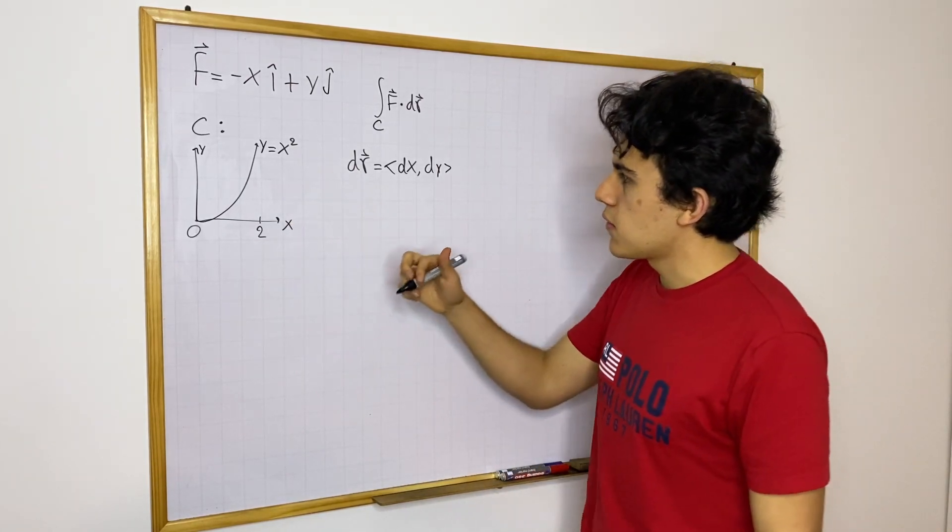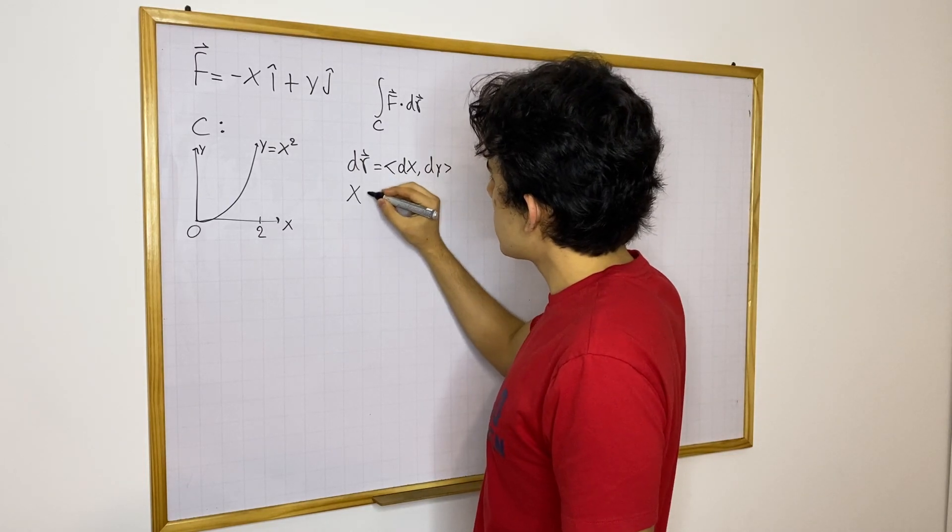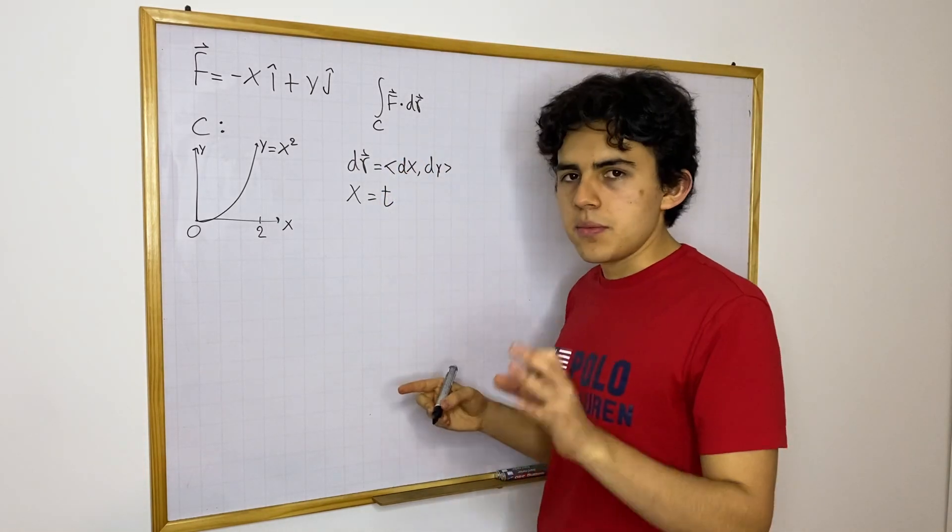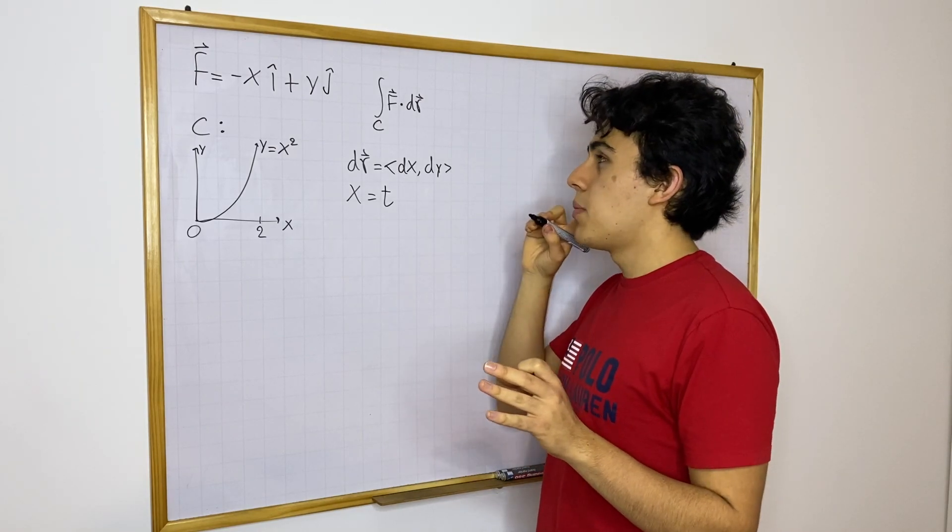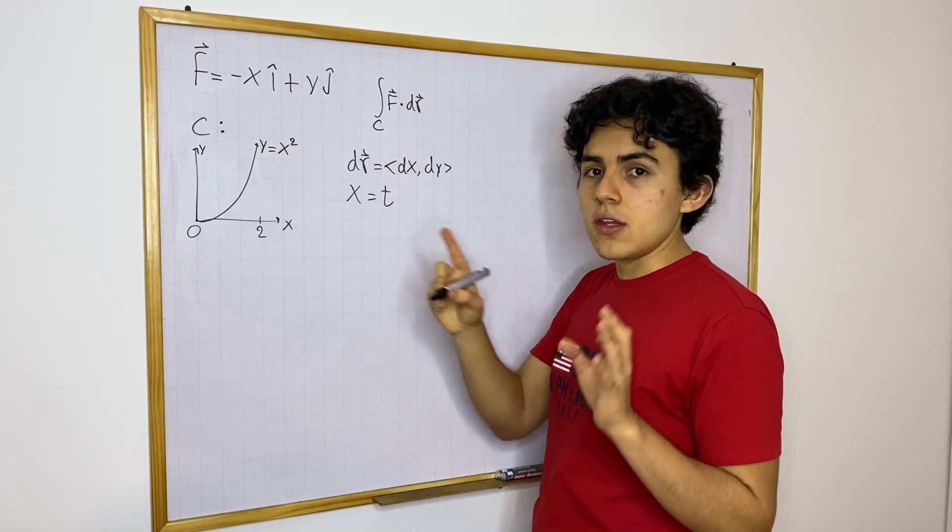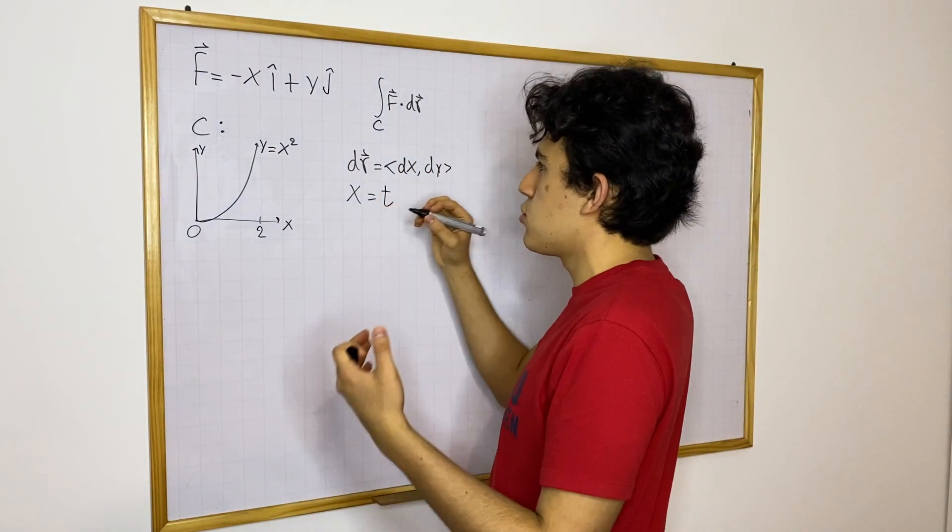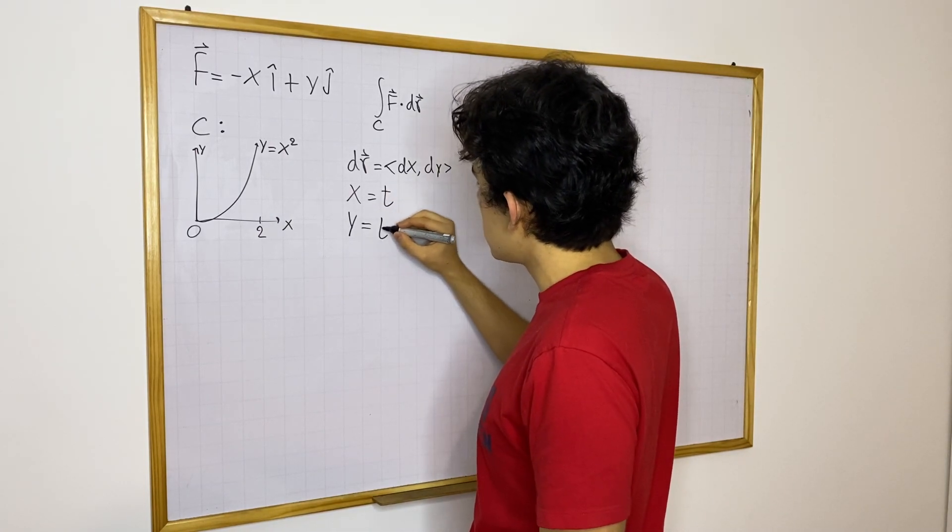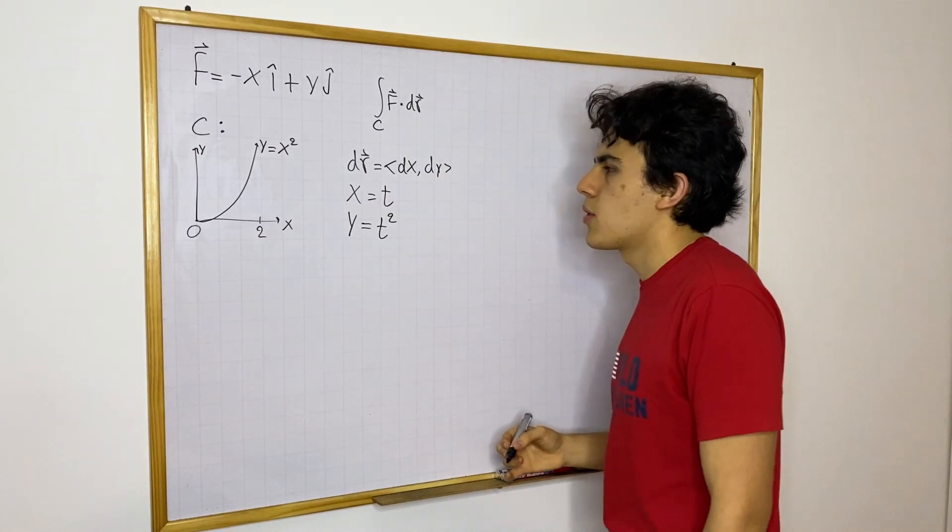So I will parameterize this curve like this, let's say x equals t, it doesn't really matter, line integrals depend on the curve you have, but they don't depend on the parameterization that you use, so I will say y equals t squared. So this is how we're parameterizing everything.